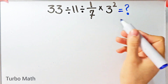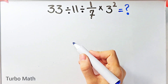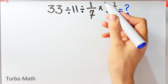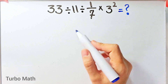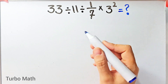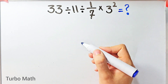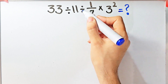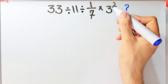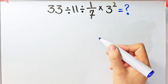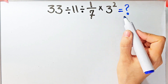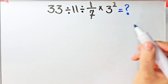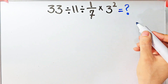Hi friends, welcome to Turbo Math channel. Many people get confused when they see this question — they don't know which operation to do first and they often make a mistake. The question is: 33 divided by 11, divided by 1 over 7, then times 3 to the power of 2. What is the answer? Can you solve it?